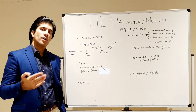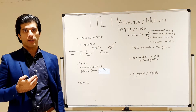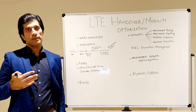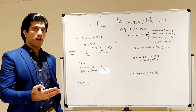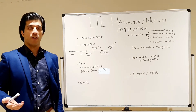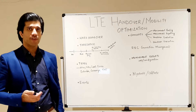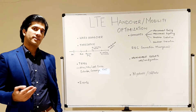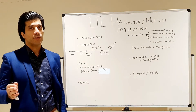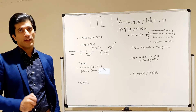Handover evaluation is done by the eNodeB. Once it has the measurement reports from the UE, it looks at the RSRP of the serving eNodeB and the RSRP of the neighboring eNodeB, and as per the formula, thresholds, and offset settings, it decides about the handover. The final step is handover execution, where a release command and a handover command are sent to the UE so that it can hand over to the next eNodeB. We will discuss the signal flow diagrams in a later lecture.